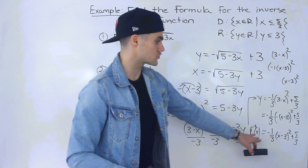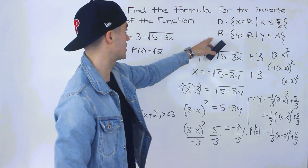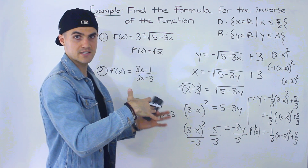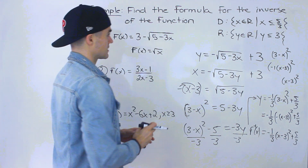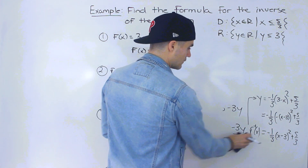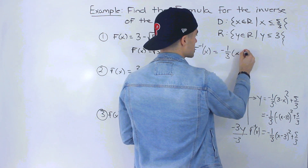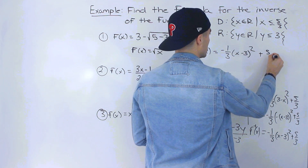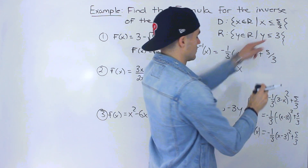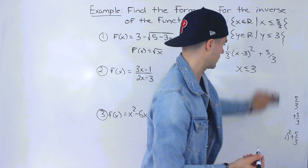However, we have to restrict the domain for this inverse, because the range was restricted for the original function. It wasn't ± when we took the square root — there was only a minus. So it's not a full sideways parabola; it's half of one. The inverse is f⁻¹(x) = -1/3·(x-3)² + 5/3, with the domain restricted to x ≤ 3, which is the opposite of the range of the original function.